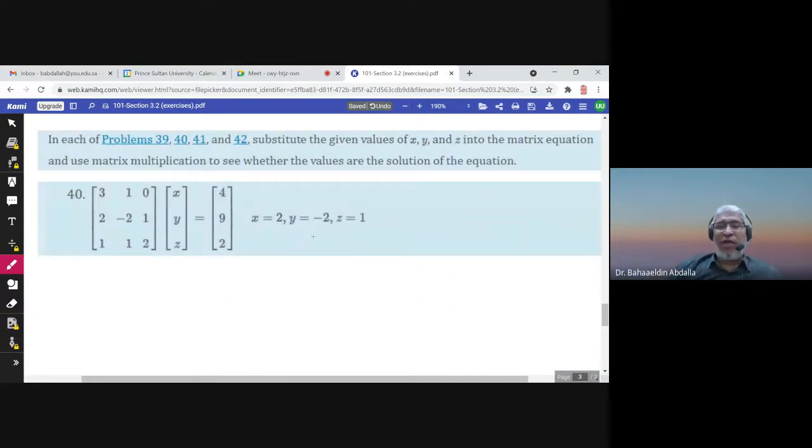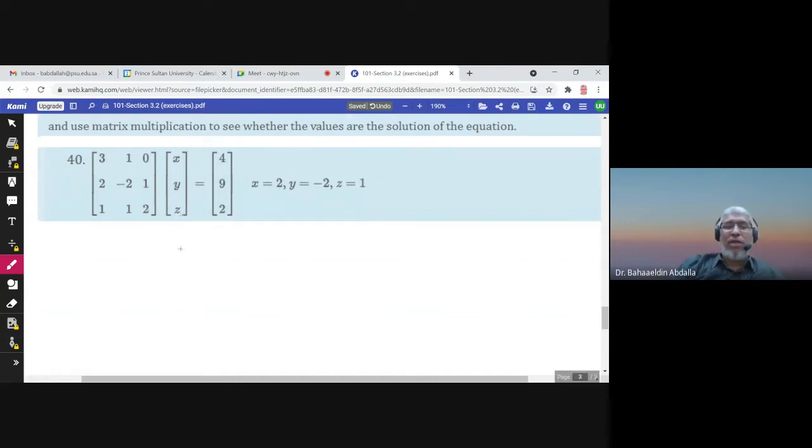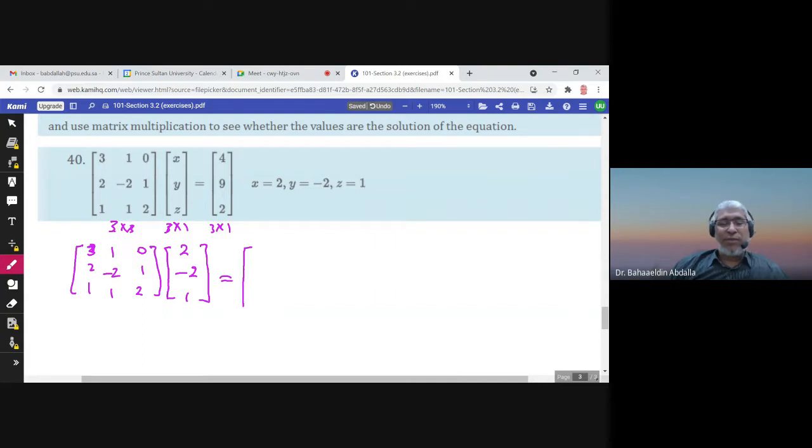Substitute the given values of X, Y, Z into the matrix equation, and use matrix multiplication to see whether the values are solution of the equation. So here we have an equation. This is a three by three matrix, and this is a three by one. When we multiply them, we get three by one. Now, if X, Y, Z are solutions, when we multiply this matrix by 2, X is 2, Y is negative 2, and Z is 1, if we multiply these two, we should get these numbers. If this happens, then X, Y, Z are solutions of this equation.